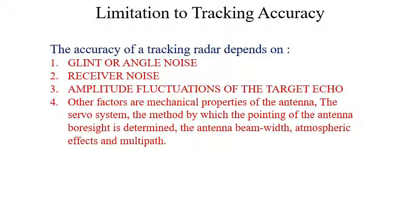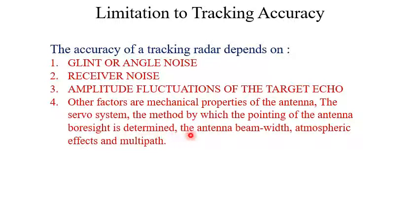Now we will consider the limitations to tracking accuracy. The accuracy of a tracking radar depends on several factors. The first is glint or angle noise, the second is receiver noise, and the third is amplitude fluctuations of the target echo — these three are the most important. Apart from these, other factors include mechanical properties of the antenna, the servo system, the method by which antenna pointing is determined, the antenna beam width, atmospheric effects, and multipath.